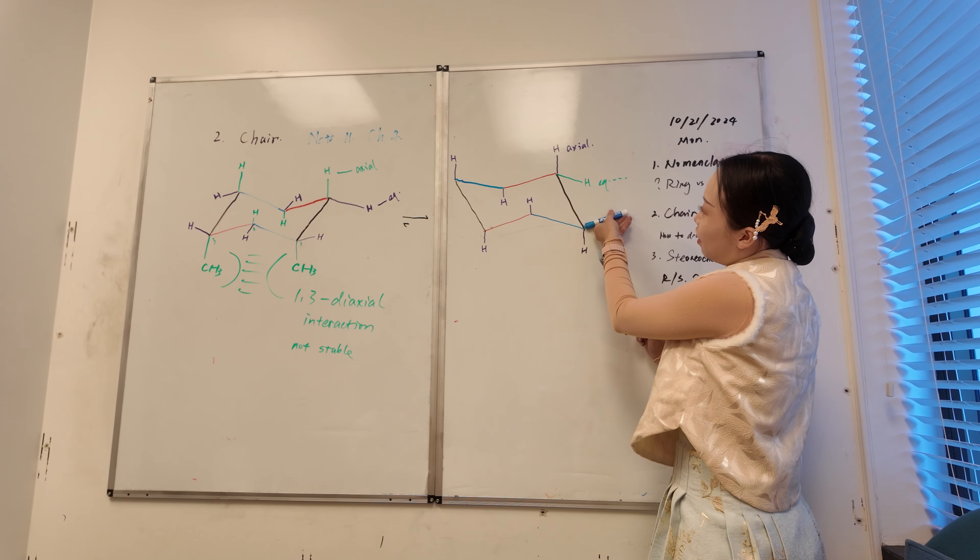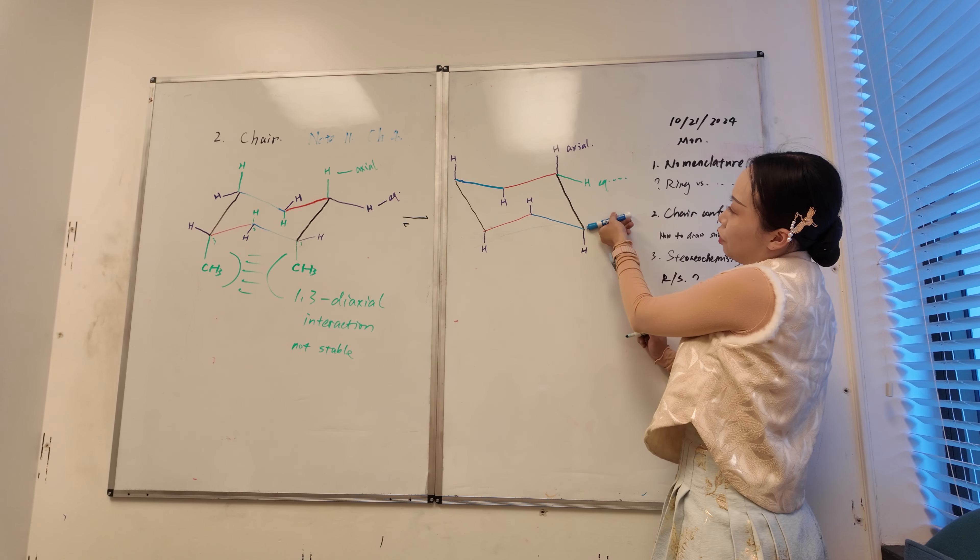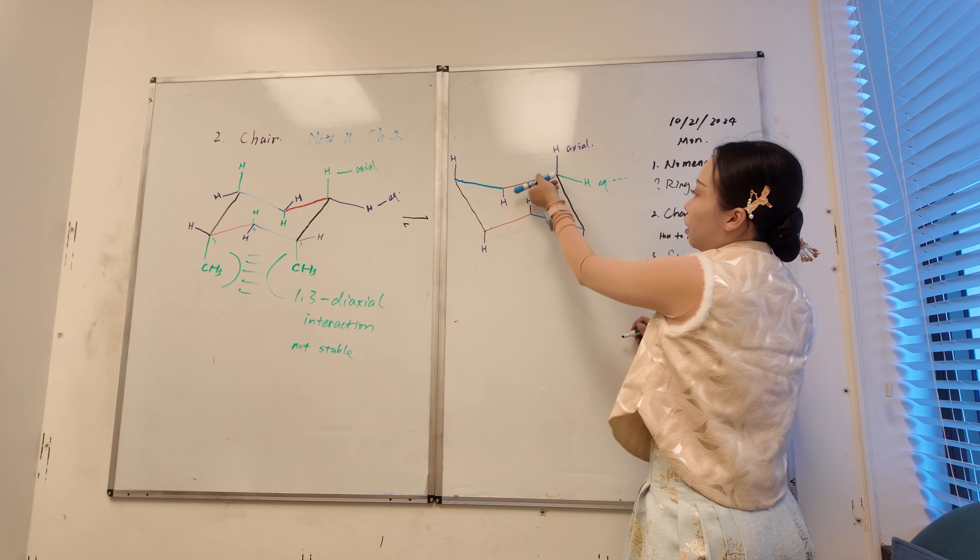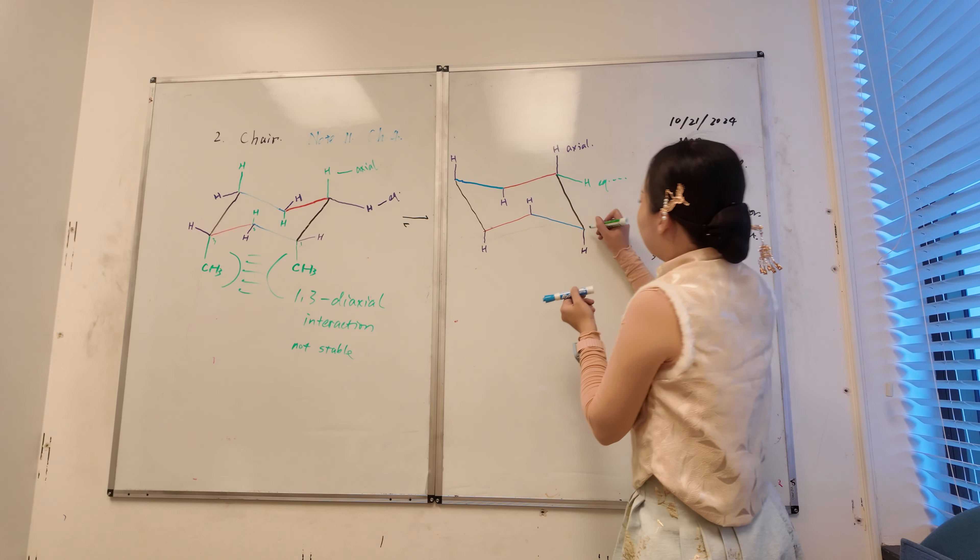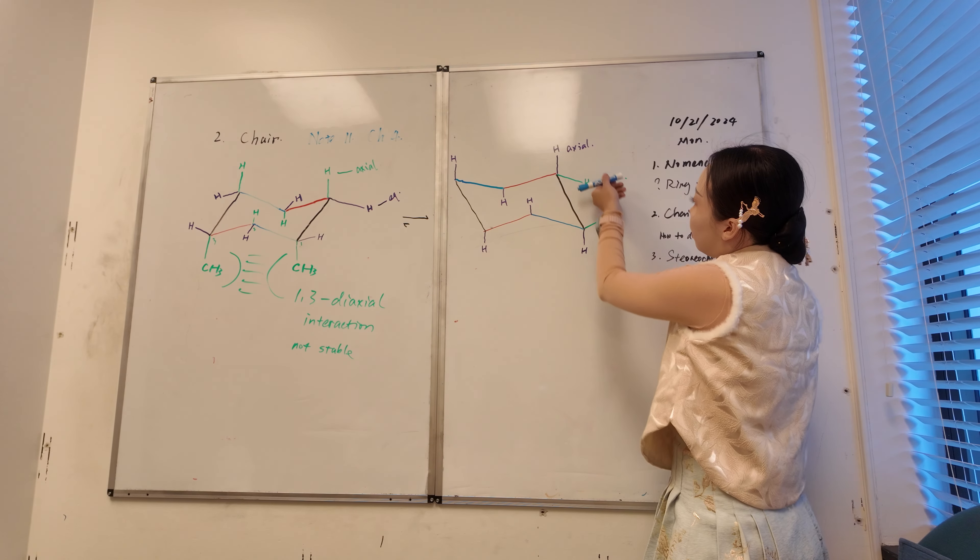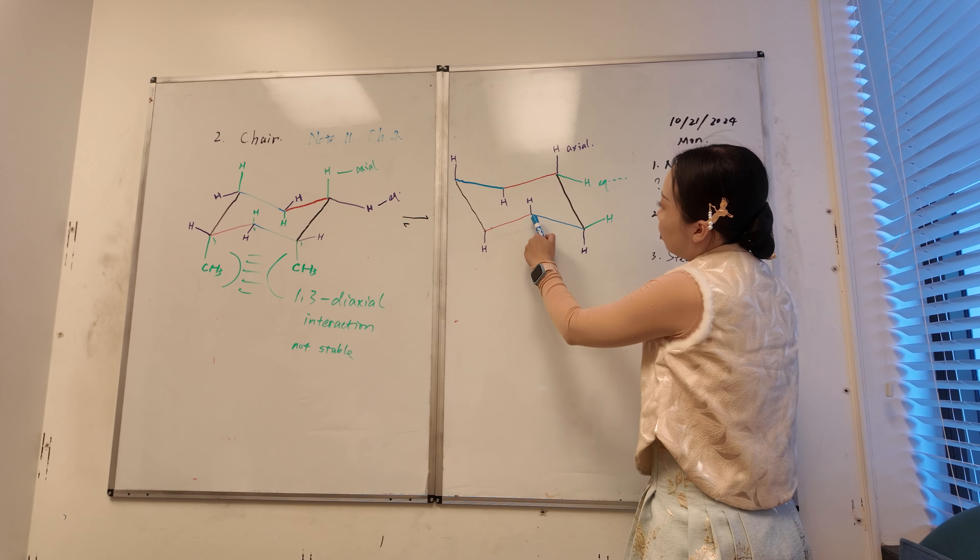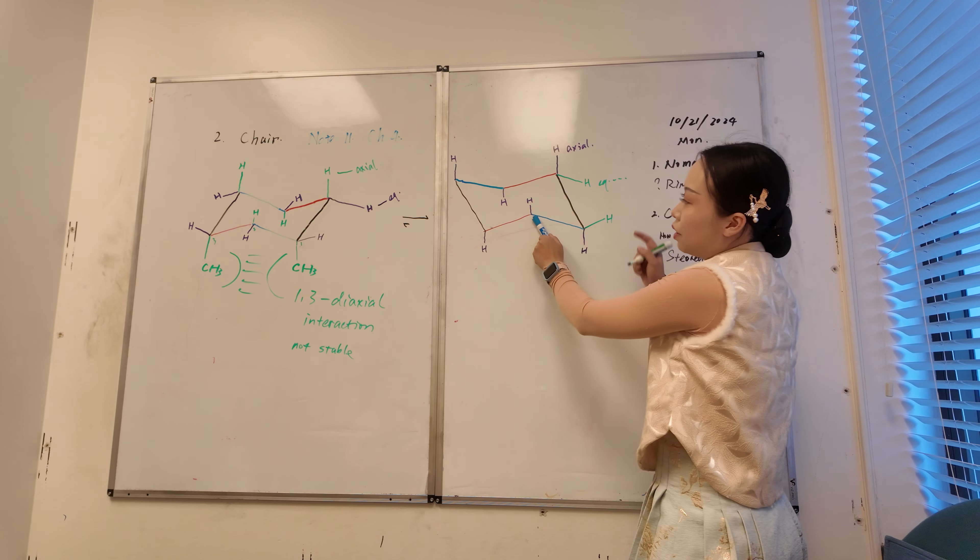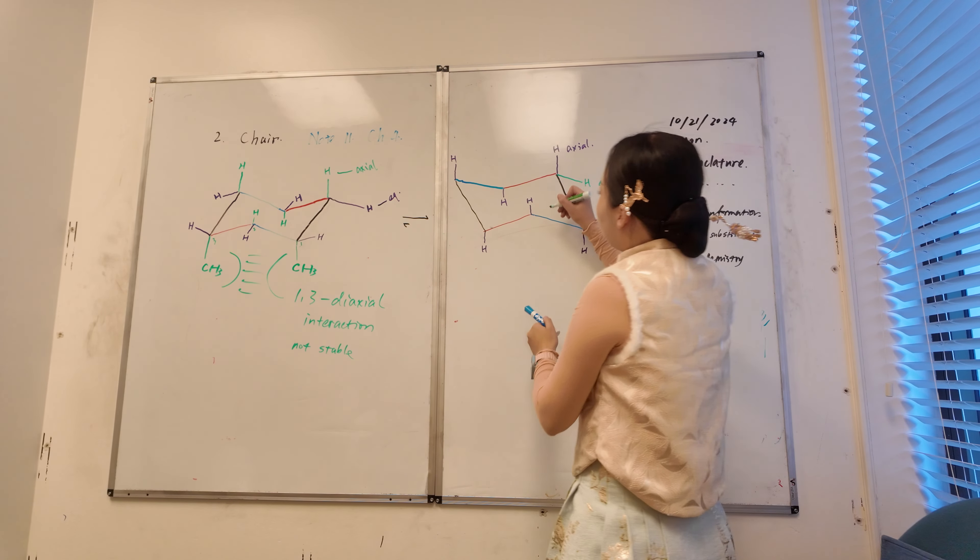So here, the equatorial bond is this one, are we good? Here. And then here, this bond, it's always your neighbor's neighbor.